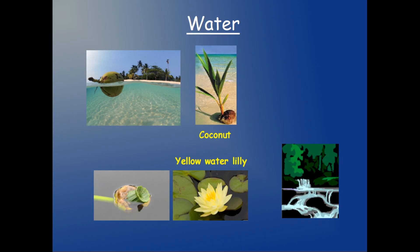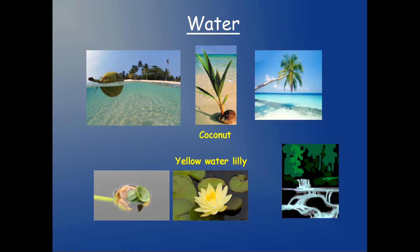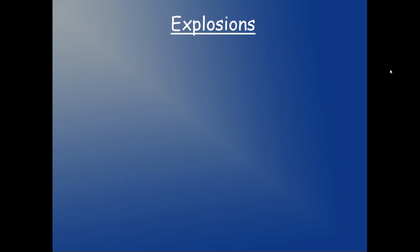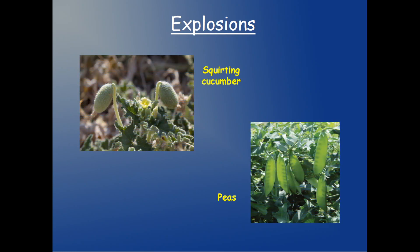And eventually we have our tree, our palm tree, that will make more coconuts. The coconuts will float, will fall in the water and swim away. And last but not least: explosions. But for this one I'm going to give you just two examples. These are squirting cucumbers and peas. Yes, peas, they explode. But for this, go to the website and watch the videos that are waiting for you. They are really, really cool. Well, bye bye, see you later.